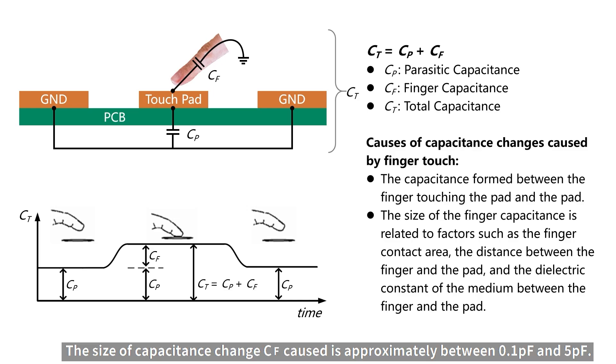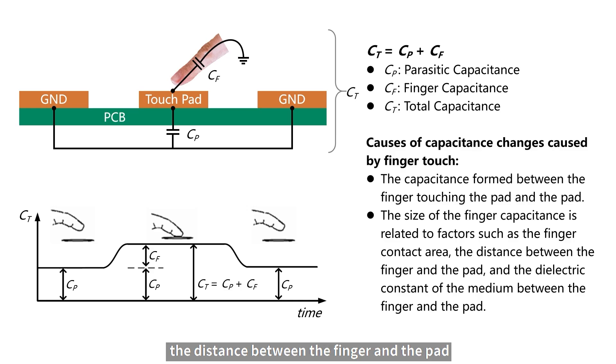The size of capacitance change CF is approximately between 0.1 picofarad and 5 picofarad. The size of CF is related to factors such as the finger contact area, the distance between the finger and the pad, and the dielectric constant of the medium between the finger and the pad.